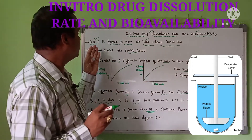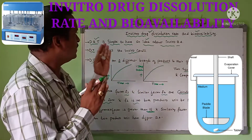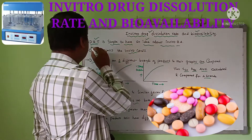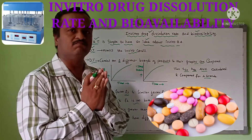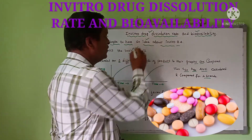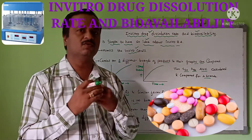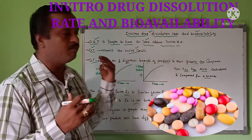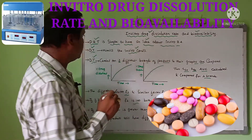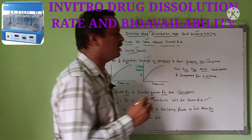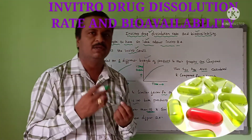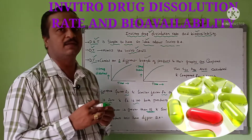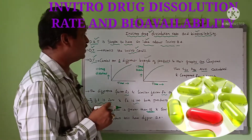Dissolution testing closely mimics the in-vivo condition. The conditions of in-vivo bioavailability are replicated here. Dissolution testing is carried out on two different brands of a product and their graphs are plotted. To determine bioavailability, we select different brands, then plot the graph with time on the x-axis.